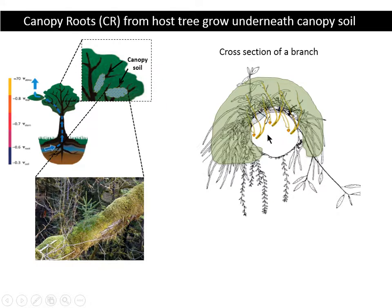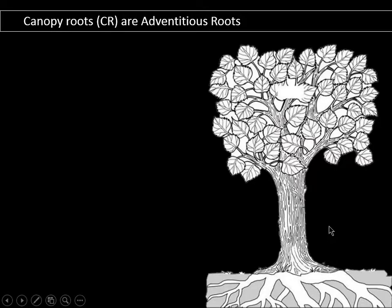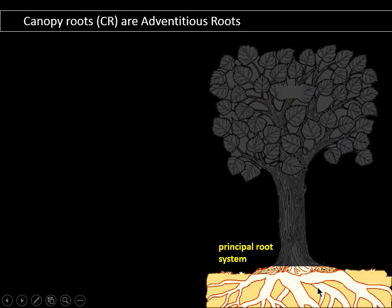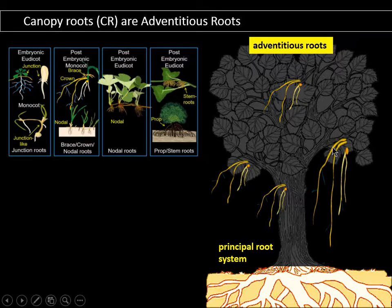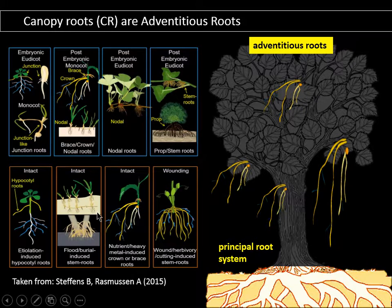This is a cross-section of a branch where you can see all the epiphytes. Eventually, it becomes a canopy soil — a thick layer of about 15 to 20 centimeters. Canopy roots grow from the branches underneath that canopy soil. These are adventitious roots. Adventitious roots are all those roots that grow in unusual parts of the body of the tree, on the leaves or on the branches. There are adventitious roots for development and also adventitious roots that develop because of stress — flood or drought stress.